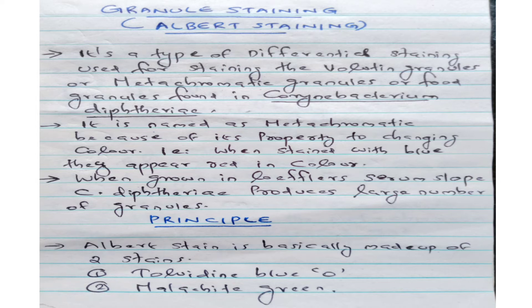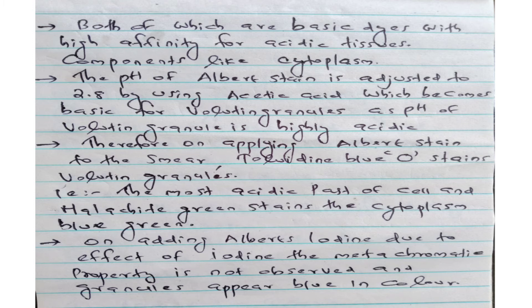What is the principle of granule staining? Albert staining is basically made up of two types of stains: Toluidine blue O and malachite green, both of which are basic dyes with high affinity for acidic tissues, such as the cytoplasm. The pH of Albert staining is adjusted to 2.8 by using acetic acid, which becomes basic for volutine granules as the pH of volutine granules is highly acidic.